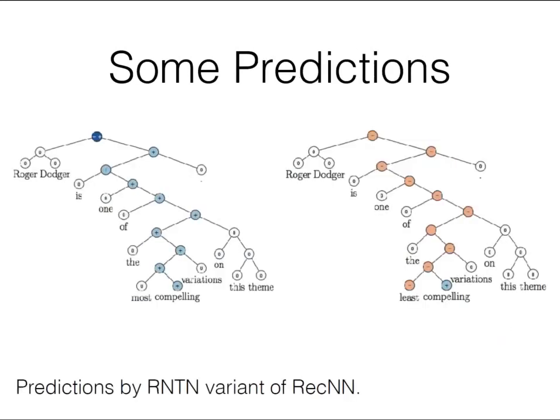One of the cool things you can do is look at the predictions made by the model. Here the sentence 'Roger Dodger is one of the most compelling variations on this theme' was changed to 'least compelling.' In both cases 'compelling' is a positive word, but 'least' negates it and everything propagates up. Everything else, as it combines with neutral elements, just stays with whatever sentiment remains. You can actually look inside the model and reason about what's going on.